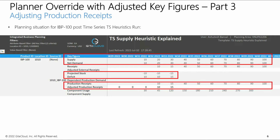Also note the supply to DC has not changed in any way. The supply override within the plant does not change the supply commitment from the plant to DC in infinite heuristic mode. The focus in the supply planning process is on understanding supply constraints, not to propagate these supply constraints to downstream DC locations yet. We will cover finite and cost-optimal supply planning topics later in a separate video series.